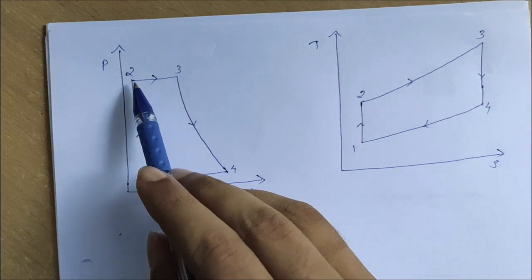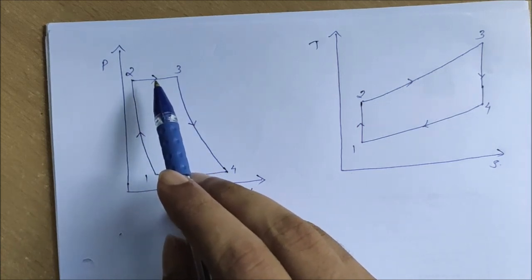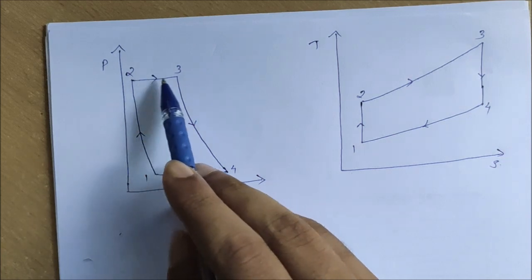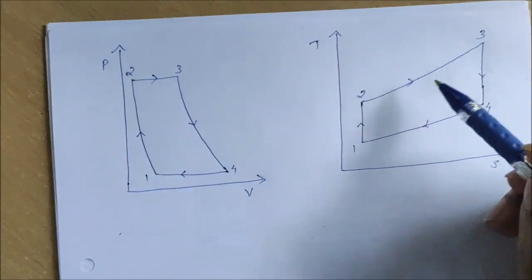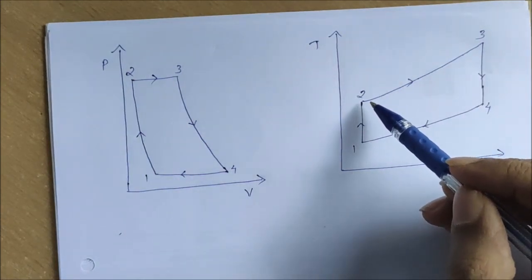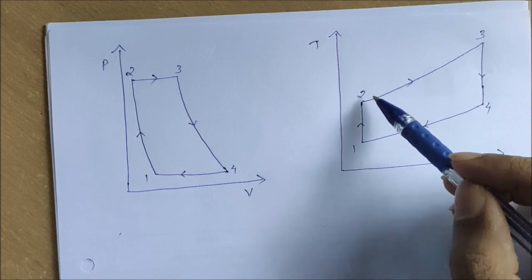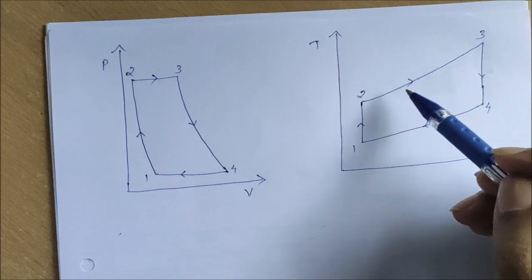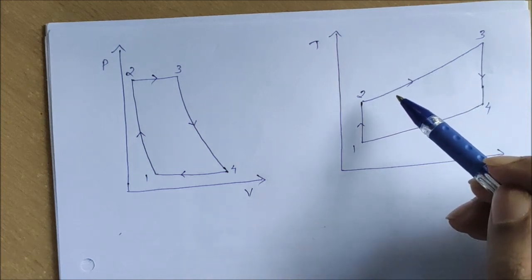Process two to three is isobaric heat addition — constant pressure heat addition. In the PV diagram, I have drawn a constant pressure line for process two to three. In the TS diagram, two to three shows the temperature increasing as heat is added.